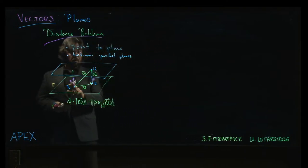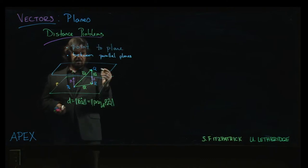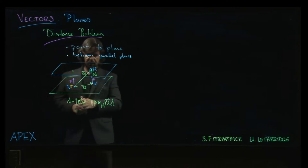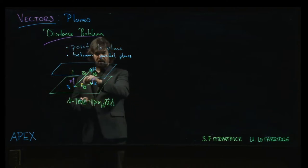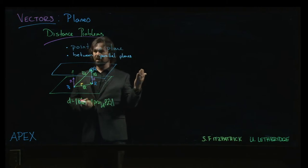Well, it's going to be the same normal vector or at least a scalar multiple of that normal vector as the first plane. And there's going to be some point on the plane that we're given. So now finding the distance between the two planes is the same as finding the distance between any point on one plane and the other plane. And so you're back to the first one. Point to plane.